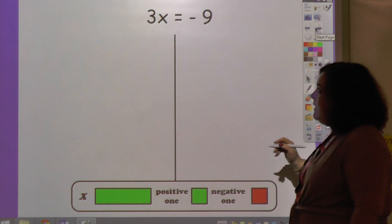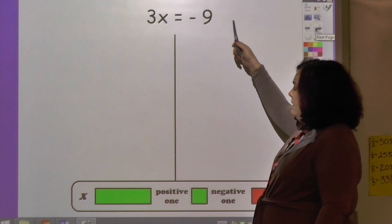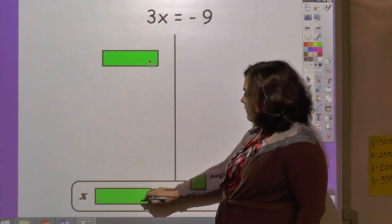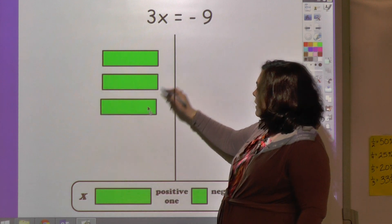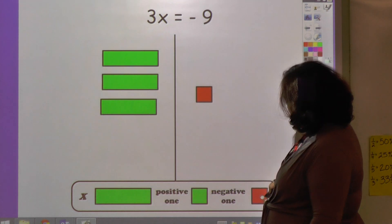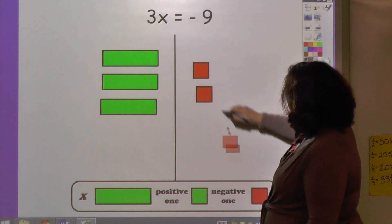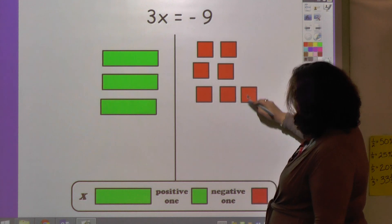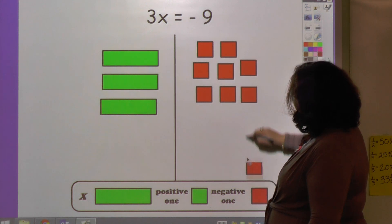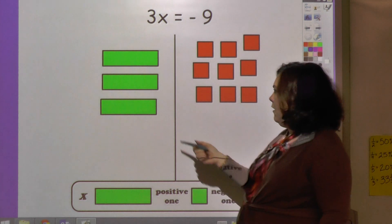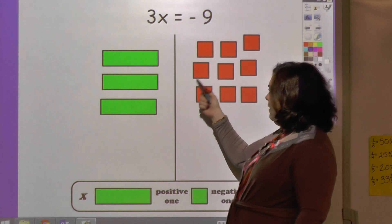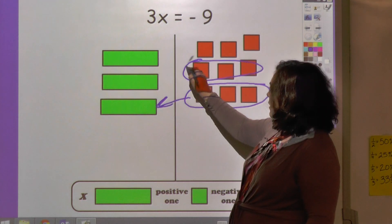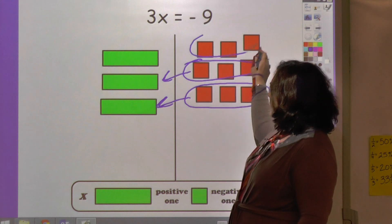Let's look at the next one: 3x equals negative 9. So again my x is positive so I'm going to use these green ones over here, and I need to represent 9 negative. I say okay I've got 3 here and I have them split up into 3s.